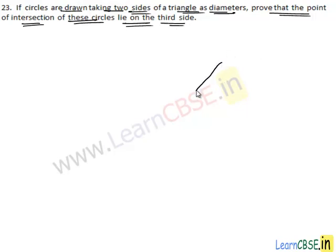That means we are given a triangle. By taking any two sides, circles are drawn. The diameters of these circles are the sides. We have to prove that the point of intersection of these two circles lies on the third side.